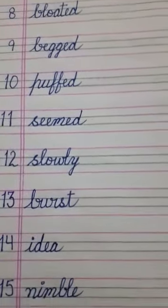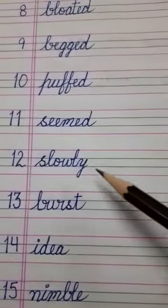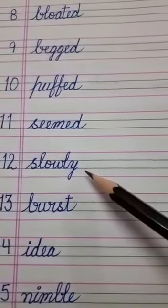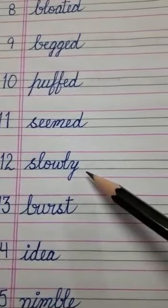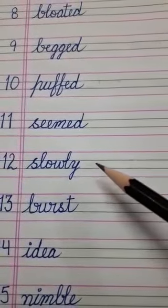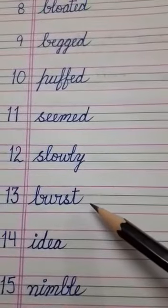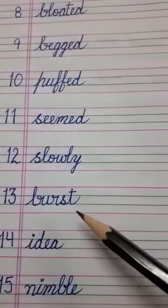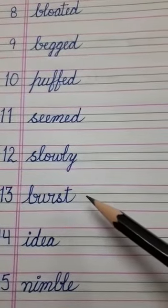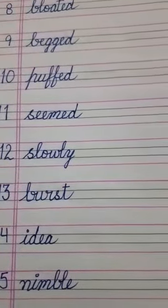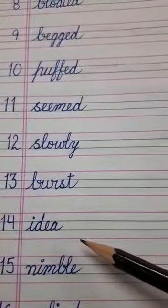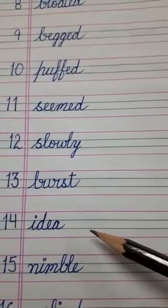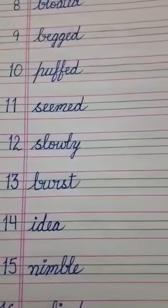Number 12 is slowly, S-L-O-W-L-Y, slowly. Slowly means dheere — in a slow manner. Number 13 is burst, B-U-R-S-T, burst. Burst ka matlab phat jaana. Number 14 is idea, I-D-E-A, idea. It means tarkib ya upay — a plan or solution.